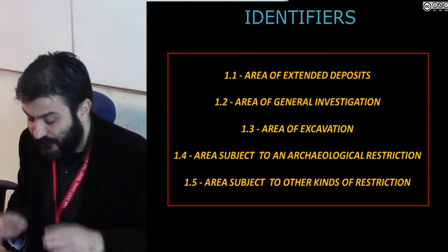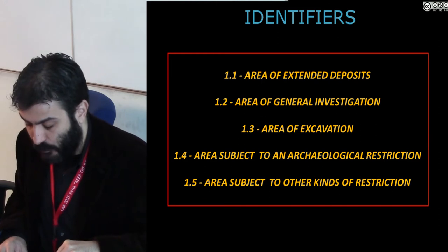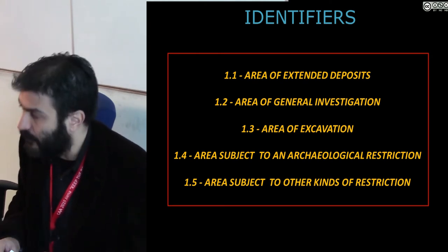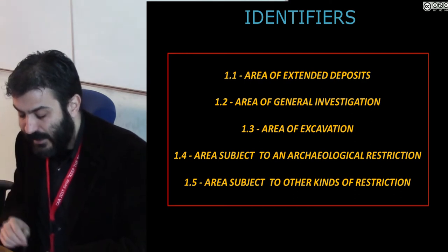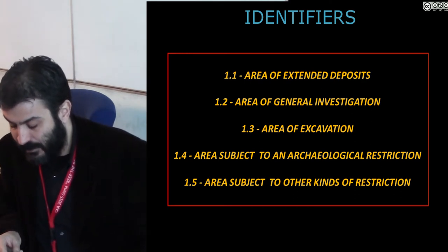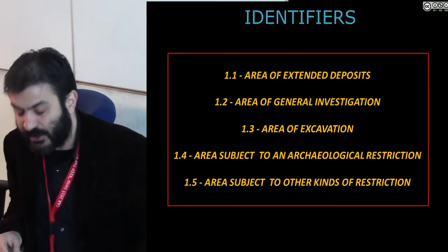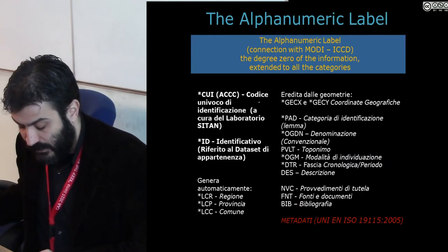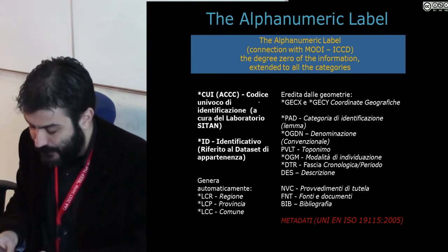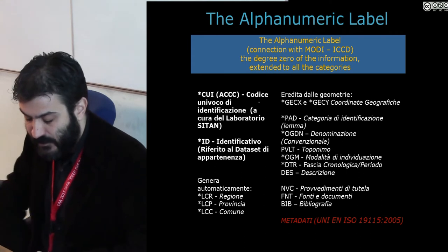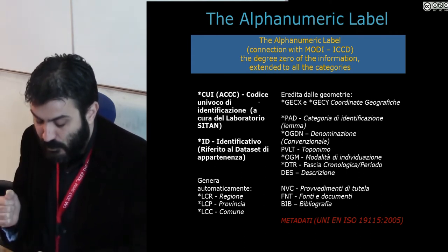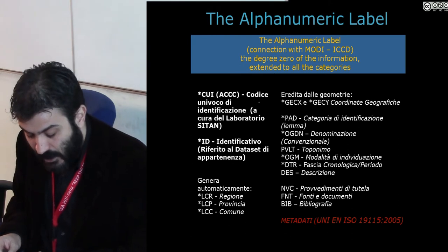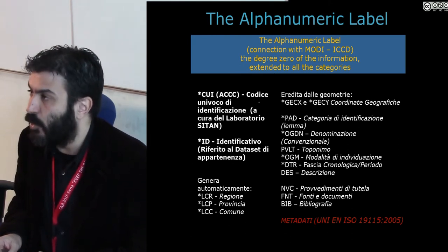We can now define the cartography produced and in production by the project. We have already explained the data structure of the CETAM project in two other sessions of this CAA, so I will center on the acquisition of a particular type of identifier: the ministerial archaeological restrictions or constraints. The pattern of acquisition of alphanumeric attributes has been defined on the basis of the indication of the inter-ministerial committees, which had inherited them from the minimum mandatory data set chosen by the Central Institute for Catalog and Documentation — the ICCD — during the experimentation of its informative module, the MODI.